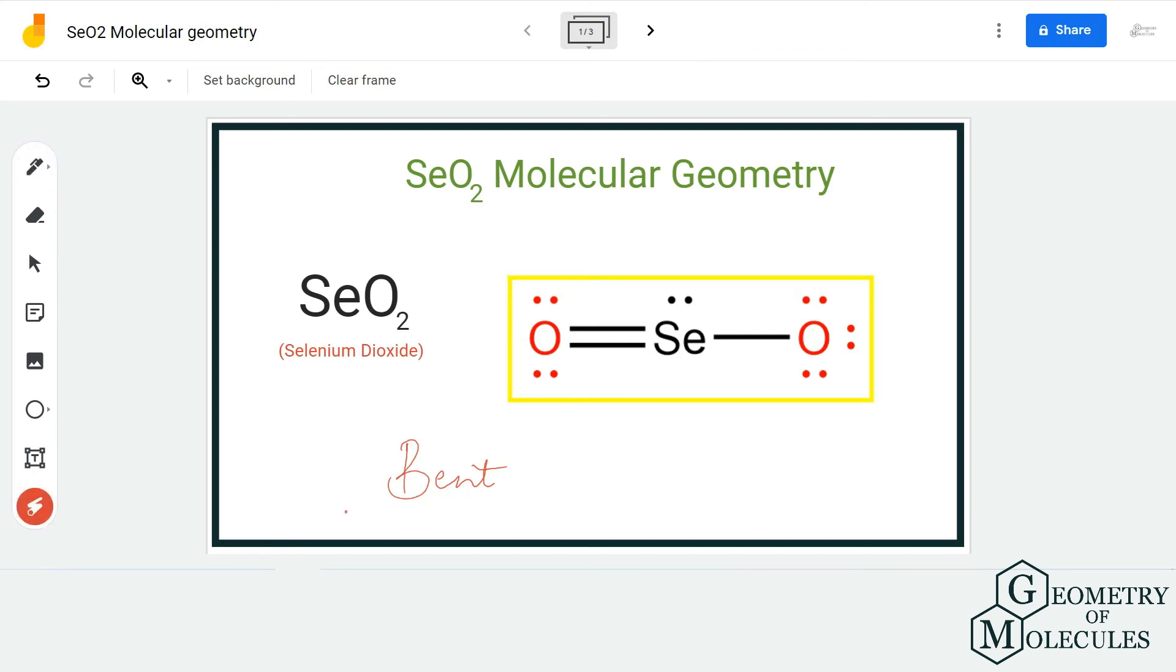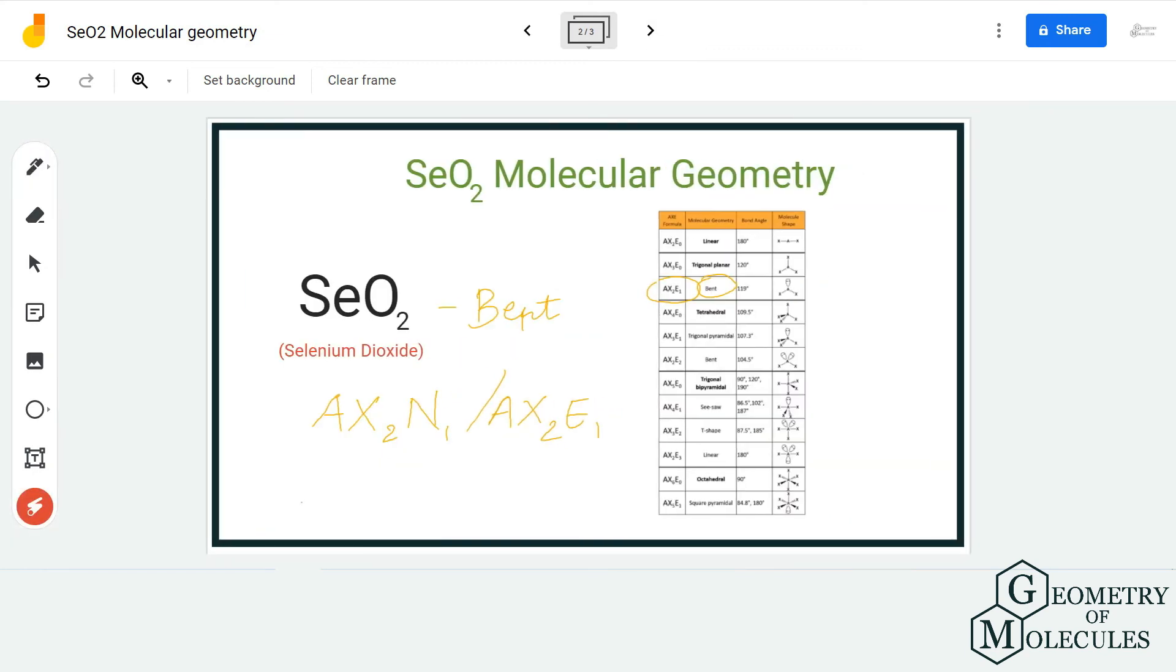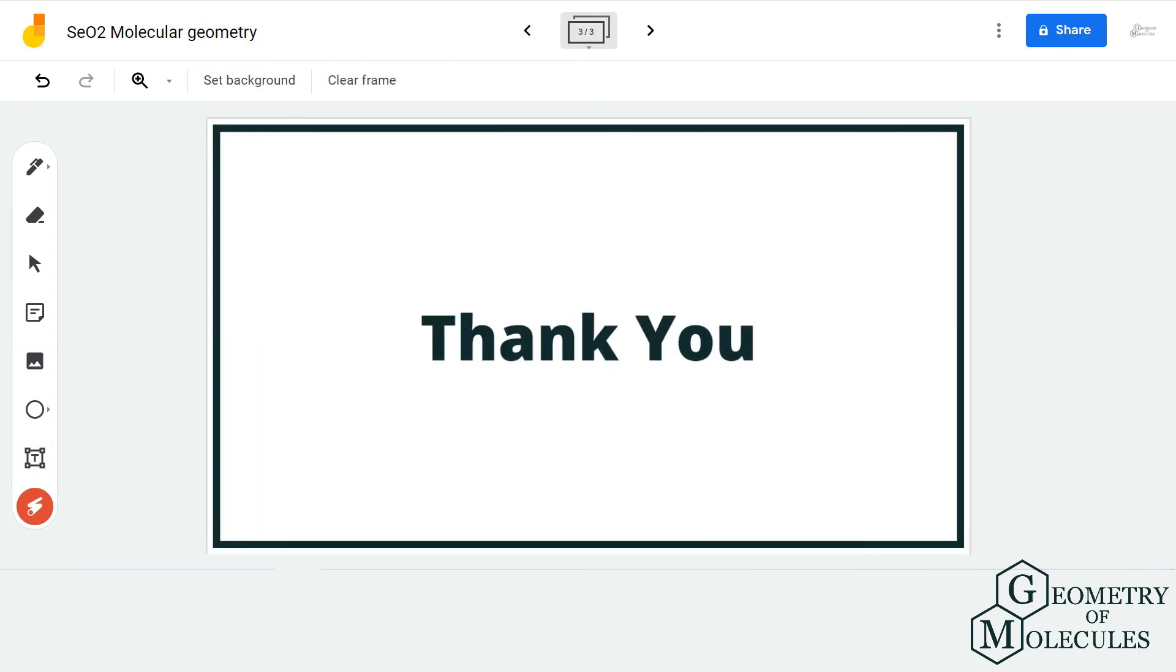Remember that it is bent because of the lone pairs of electrons that are present on the central atom. I hope this video helps you understand the molecular geometry of SeO2.